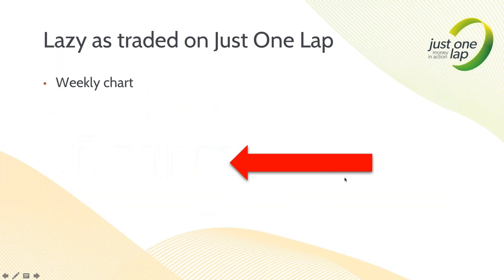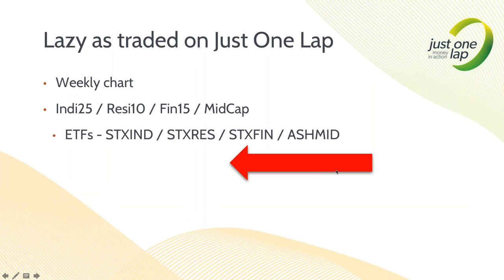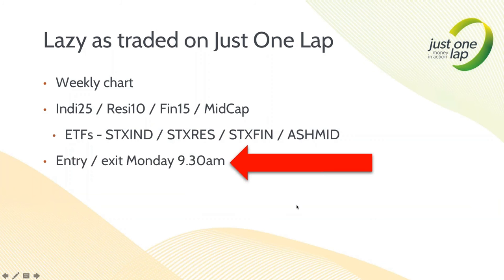On Just One Lap, I use a weekly chart and trade the Indy 25, Resi 10, Fini 15, and mid-cap indices — the three major sub-indices plus mid-cap. I trade the ETFs: Satrix Indy, Satrix Resi, Satrix Fini, and the Ashburton mid-cap. I'm not trading the top 40 directly. Very, very lazy — we just trade the index.